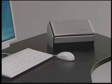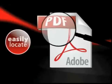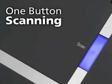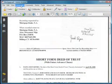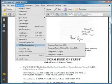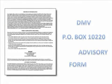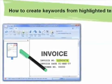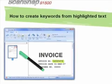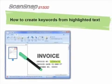ScanSnap S1500 allows operators a fast way to convert their scanned PDF files into searchable PDF files, either immediately at the point of scanning or afterwards using the included OCR software such as ScanSnap Organizer or Adobe Acrobat. However, some users may prefer to add only a few keywords to the PDF file that can then be used to search for it later. The ScanSnap S1500 provides operators several ways to add keywords to a PDF file created by ScanSnap, and this video will explore one of those methods using a highlighter pen on a black and white document to automatically convert highlighted text into searchable keywords.